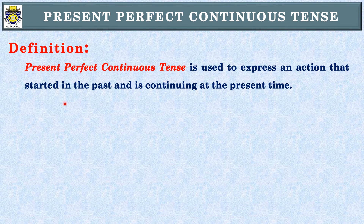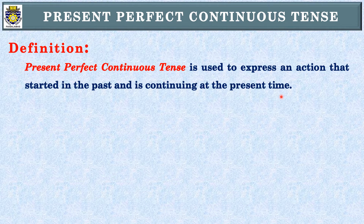Present Perfect Continuous Tense is used to express an action that started in the past — یعنی جو ماضی میں کبھی شروع ہوا — and is continuing at the present time. یعنی موجودہ لمحے تک وہ جاری حالت میں ہے، وہ ہو رہا ہے۔ ایسے action کو بیان کرنے کے لیے ہم Present Perfect Continuous Tense use کرتے ہیں۔